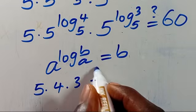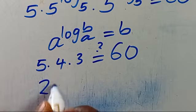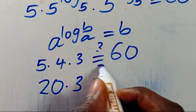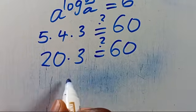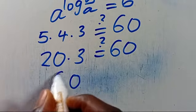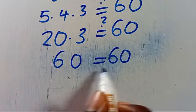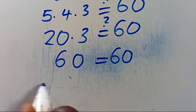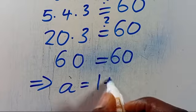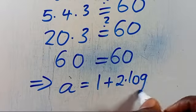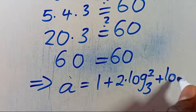The question now is: does this give us 60? From here, 5 times 4 gives us 20, and 20 times 3 gives us 60. So the left-hand side equals the right-hand side, confirming that A equals 1 plus 2 times log 2 in base 5 plus log 3 in base 5 satisfies the original equation.